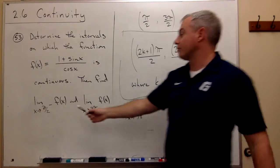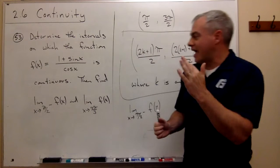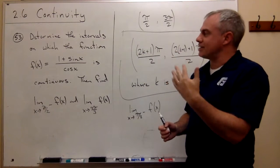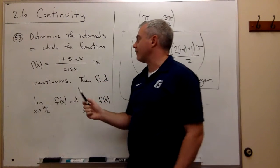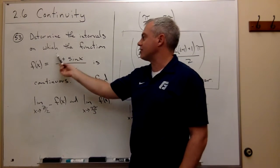Now remember approaching from the left hand side says take a number just a little bit smaller than pi over 2. If I take a number just a little bit smaller than pi over 2, then what is happening to the top?